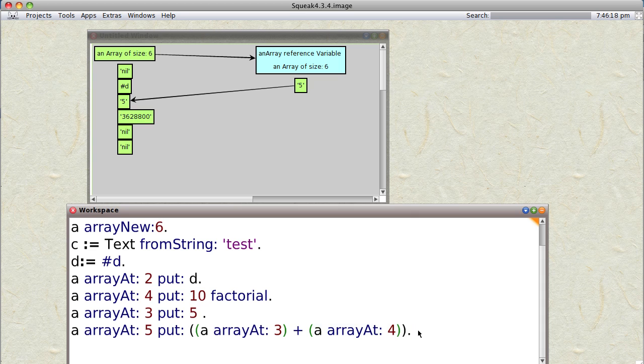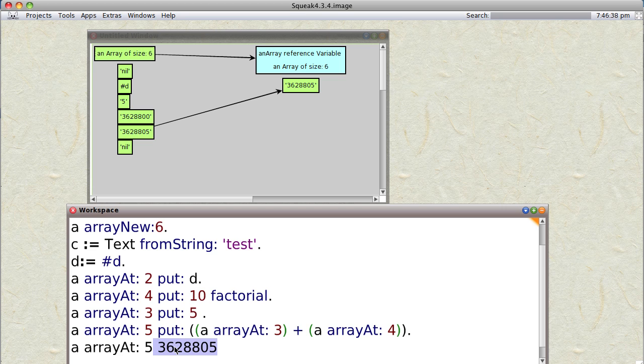And when we do it, it puts the value into that slot. And of course if we wanted to, we could do array at 5 and do it. And if we were to print it, we would see that it is indeed...